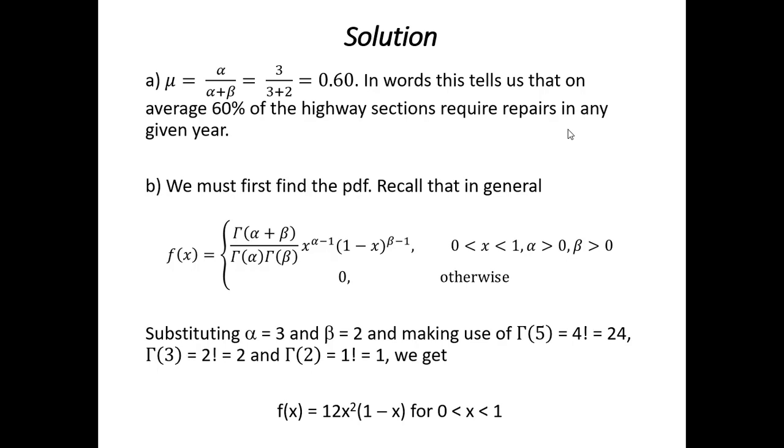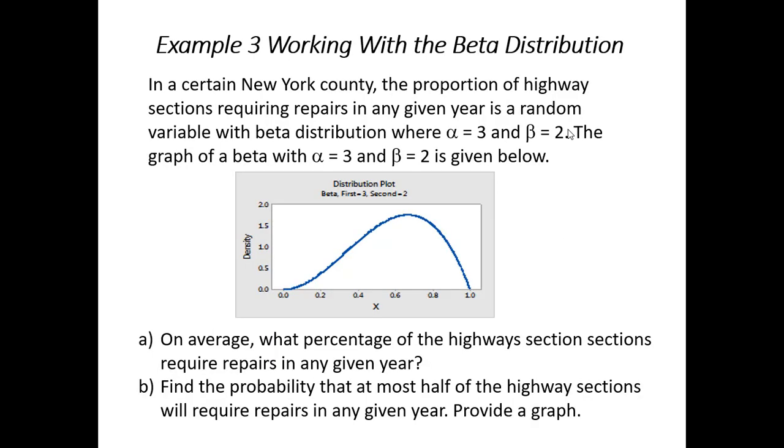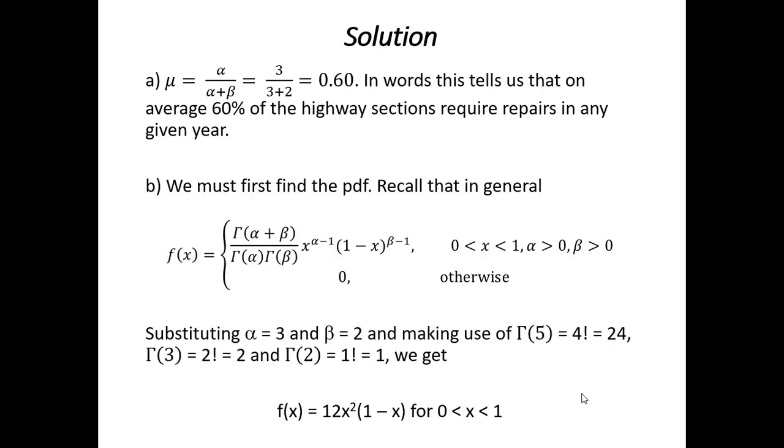Now, in order to find the probability in Part B, let's just backtrack a second over here. We want to find the probability at most half of the highway sections require repairs. So, really, we're trying to find the probability that x is less than one half. All right, so, in order to do that, we must find the PDF. Okay, but it's not too bad because these numbers are manageable. If I think in terms of this numerator, I'm going to have gamma of 3 plus 2, which is gamma of 5. Gamma of 5 would be 4 factorial, which is 24.